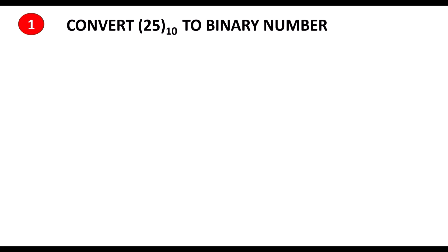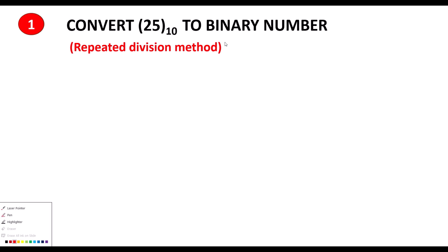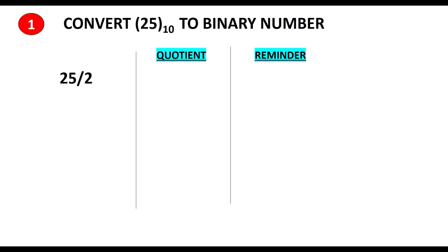We use a method called the repeated division method to do the conversion. Since we want to convert 25 to a binary number, the base of binary is 2, so we use 2 to divide 25.